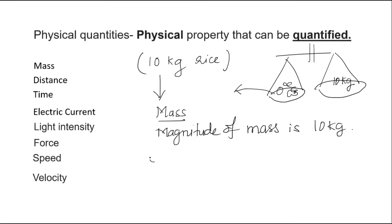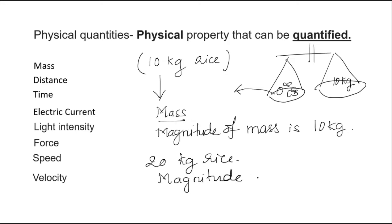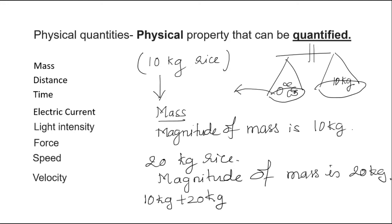Suppose someone buys 20 kg of rice. What is the change? The change is the magnitude — the magnitude of mass is 20 kg. So if I ask you what is the total rice bought in that shop, we simply add 10 kg plus 20 kg and say it is 30 kg of rice. It's a simple calculation.